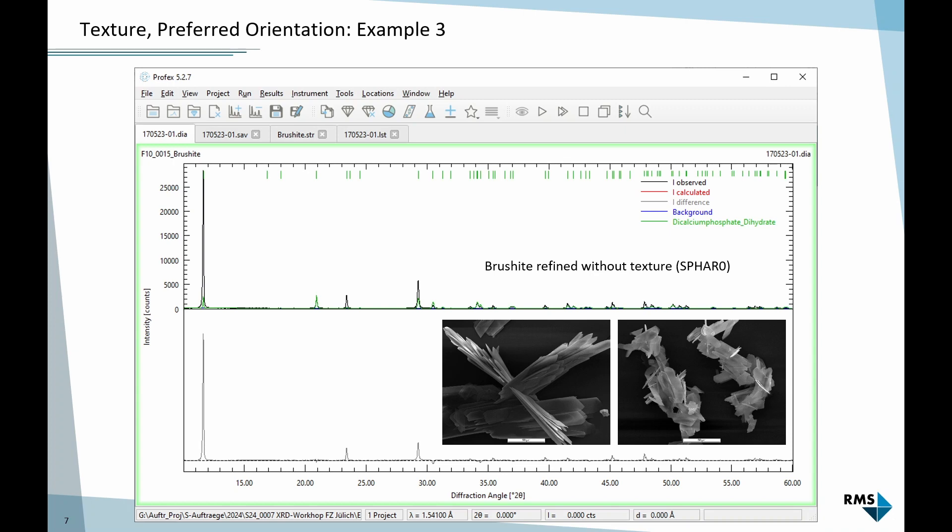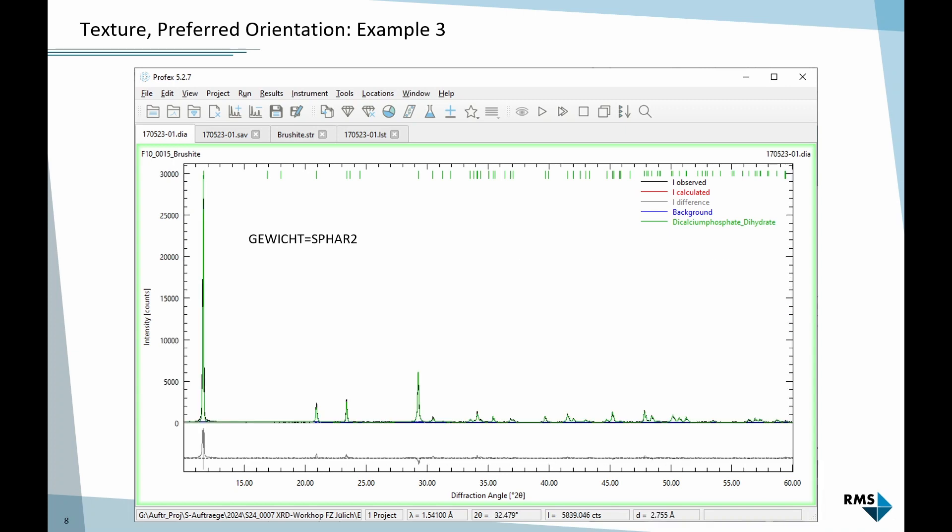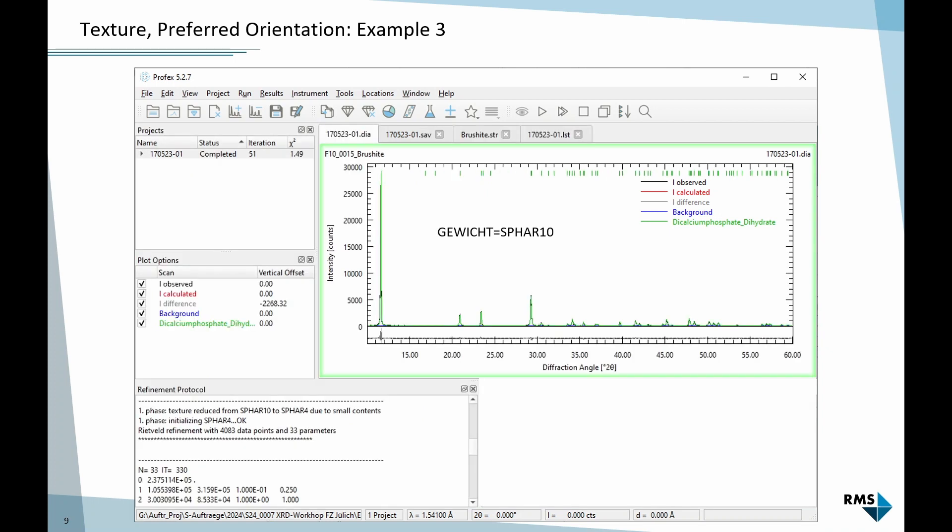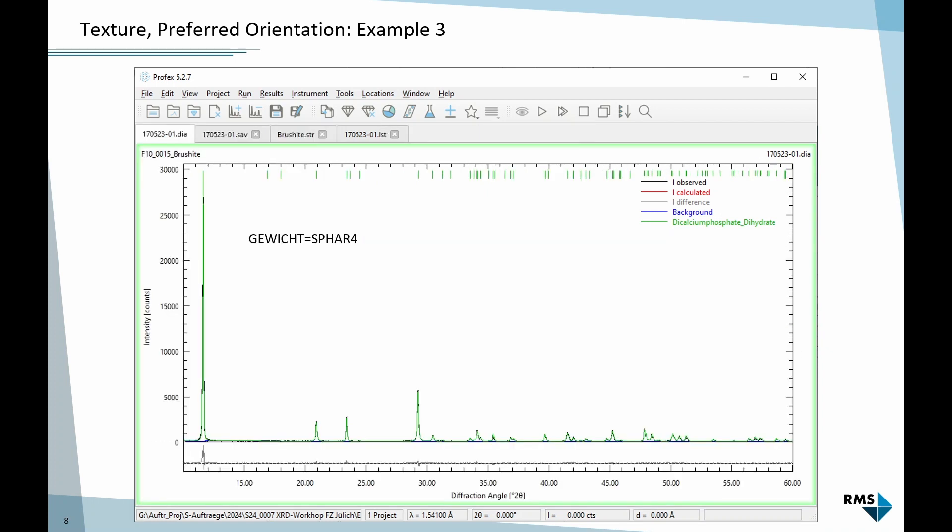If I refine it with texture refinement disabled by setting it to SPHAR 0, you can see that the fit is terrible at the beginning. This very strong, I think it's the 001 or something, peak is just massively underrepresented. If I enable SPHAR 2, it gets a lot better. Even if I go to SPHAR 10, it's actually about the same as SPHAR 4.